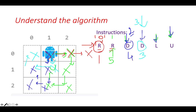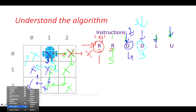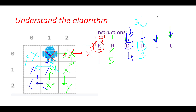For the iteration starting from index 4, the first instruction is L so the robot moves left. Then U — the robot tries to go up but goes out of the grid. The robot was only able to execute 1 instruction successfully, so the answer for index 4 is 1.